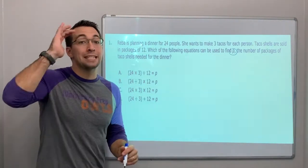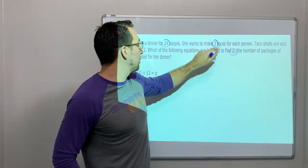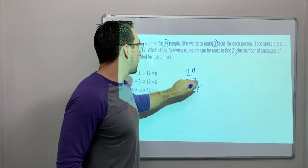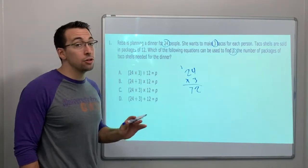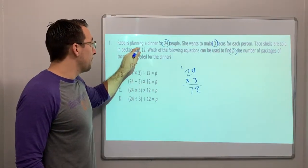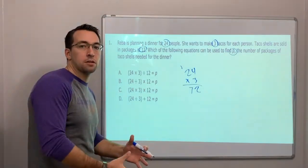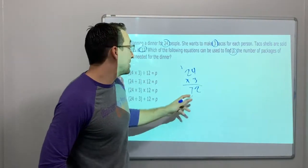Well, first, let's figure out how many tacos. So tacos: 24 times 3 is 72 tacos. She needs to make 72 tacos. And we want to divide that by 12, because we know 12 shells come in a box. So 72 divided by 12.